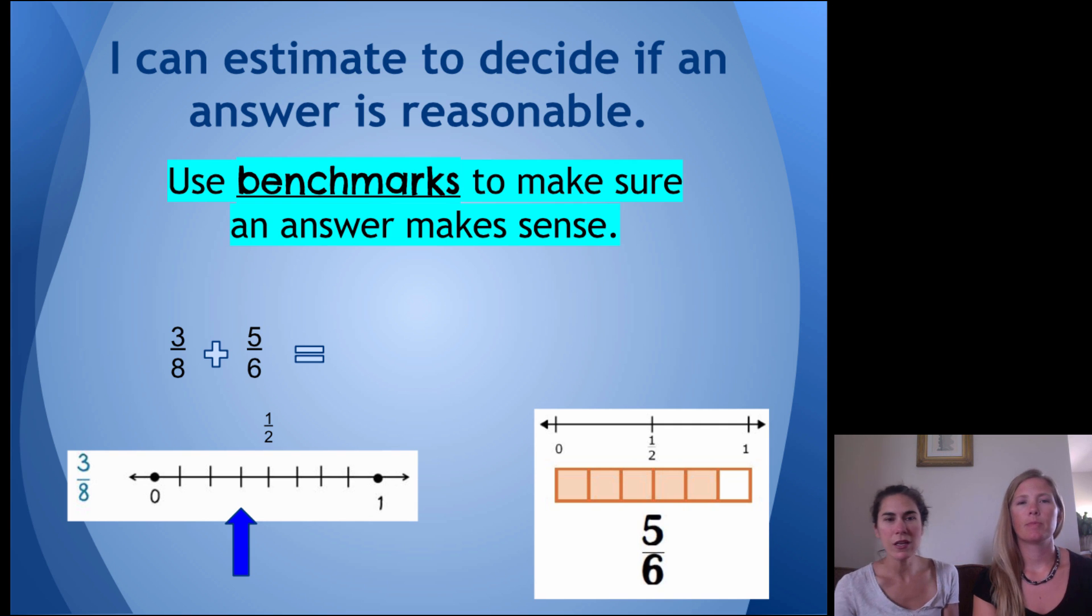So, when you're looking here, we have three-eighths plus five-sixths. Well, you can think about three-eighths as a fraction. And you can think to yourself, well, is it closer to zero? Is it closer to one-half? Or is it closer to one? In this case, three-eighths, we are showing you this visual, too, that it's close to four-eighths or equal to one-half. Right. So, we can think of three-eighths as close to one-half.